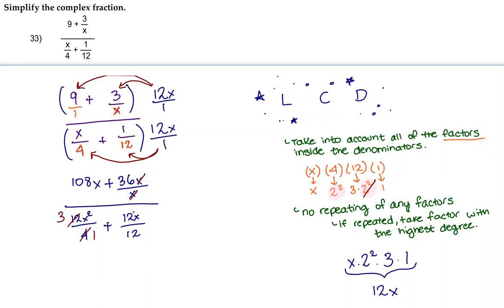And then here we can cancel out the 12 and the 12. So that leaves us with 108x plus 36 over 3x squared plus x.